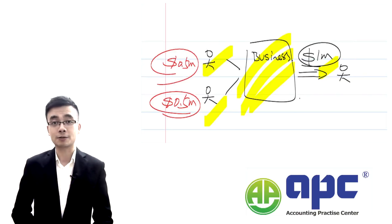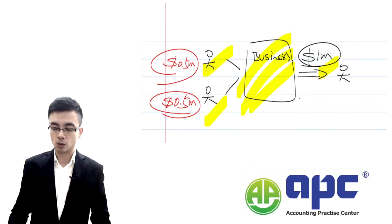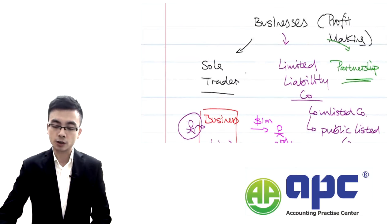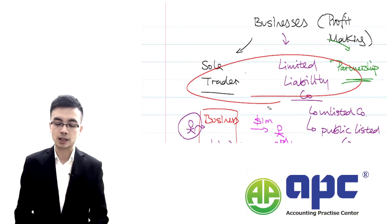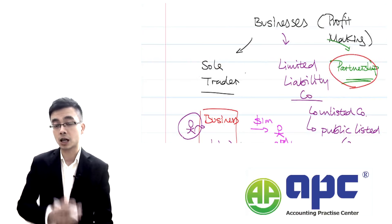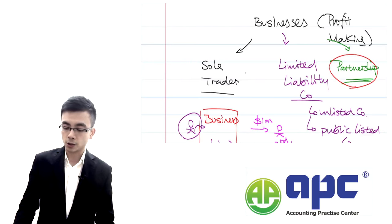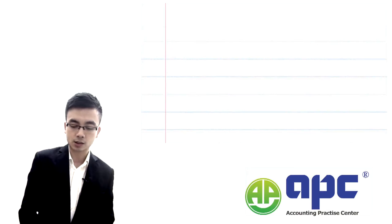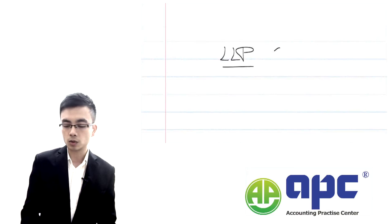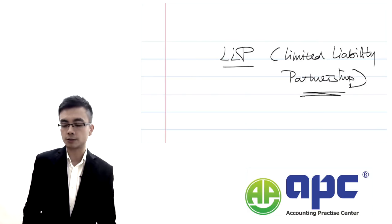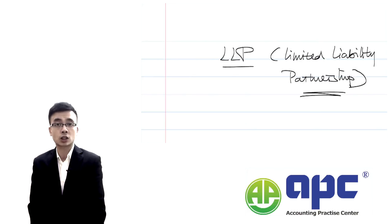If you find it difficult to pay that money, you can apply for personal bankruptcy to write off that liability — but it's entirely up to you. So we need to know that there are three types of businesses. Looking at accountancy firms nowadays, most of them will be in the form of a partnership business type — to be accurate, that's called the LLP, or Limited Liability Partnership.